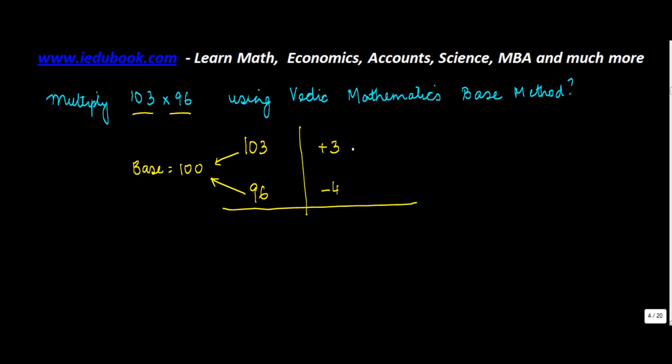Despite the different signs, the process remains the same. Multiply 3 by minus 4 to get minus 12. Now take one of these numbers, let's say 96, and add the difference of the other one.